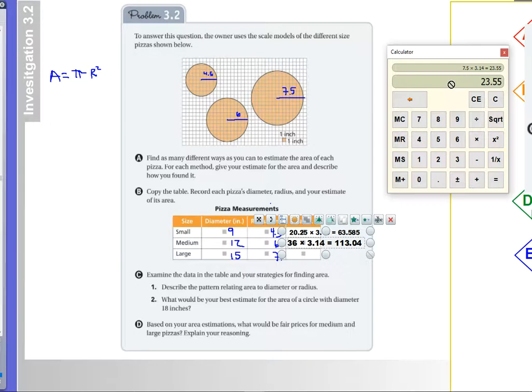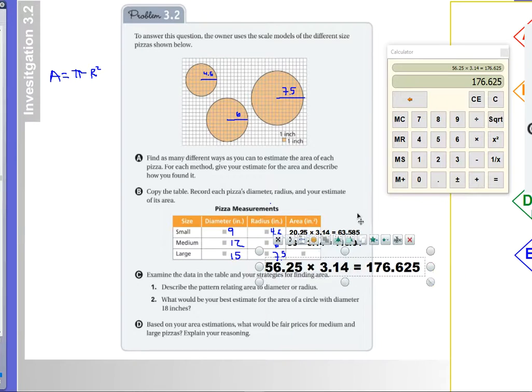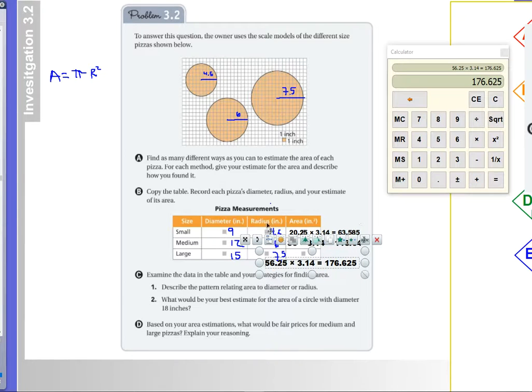So 7.5 times 3.14. All right, and that, what did I do wrong here? I didn't square the radius. Let's try it again, squared times 3.14, humbling to the end. All right, so there we go.